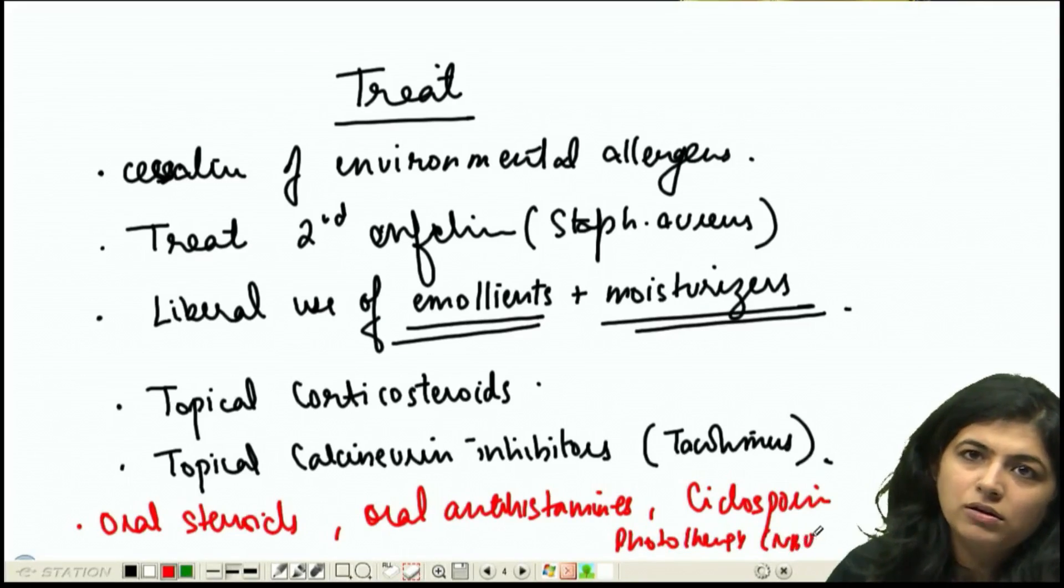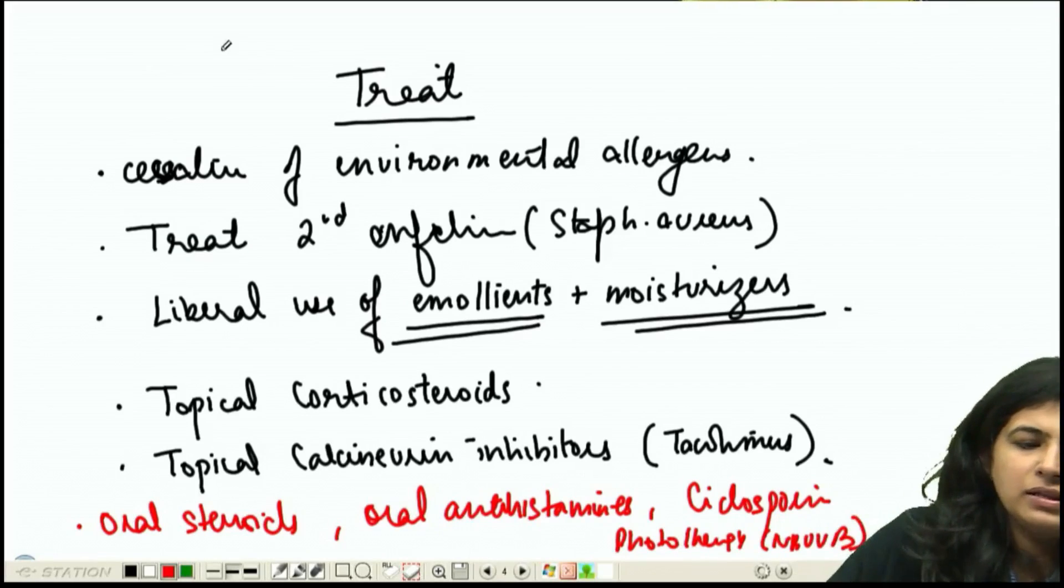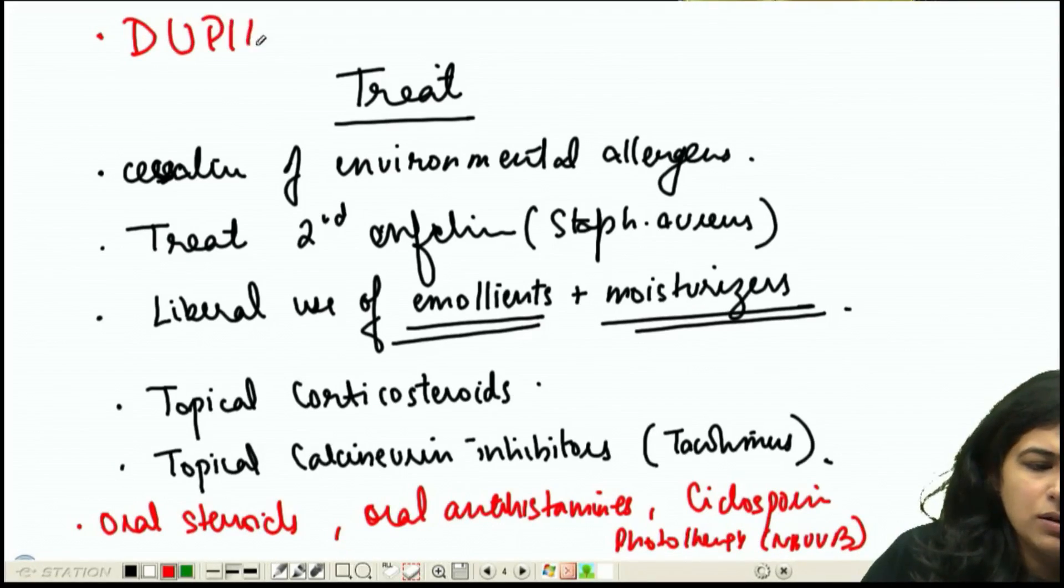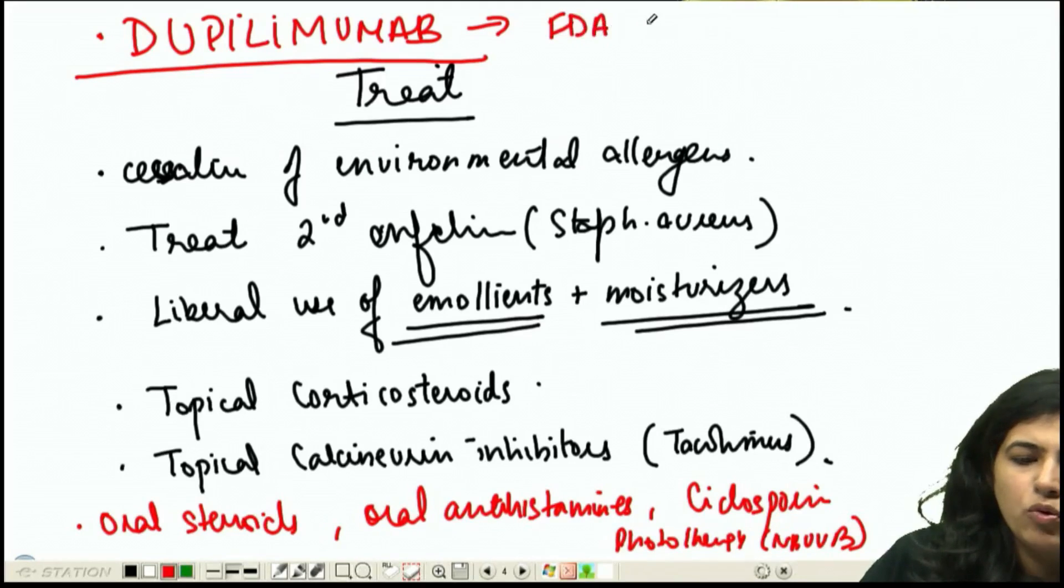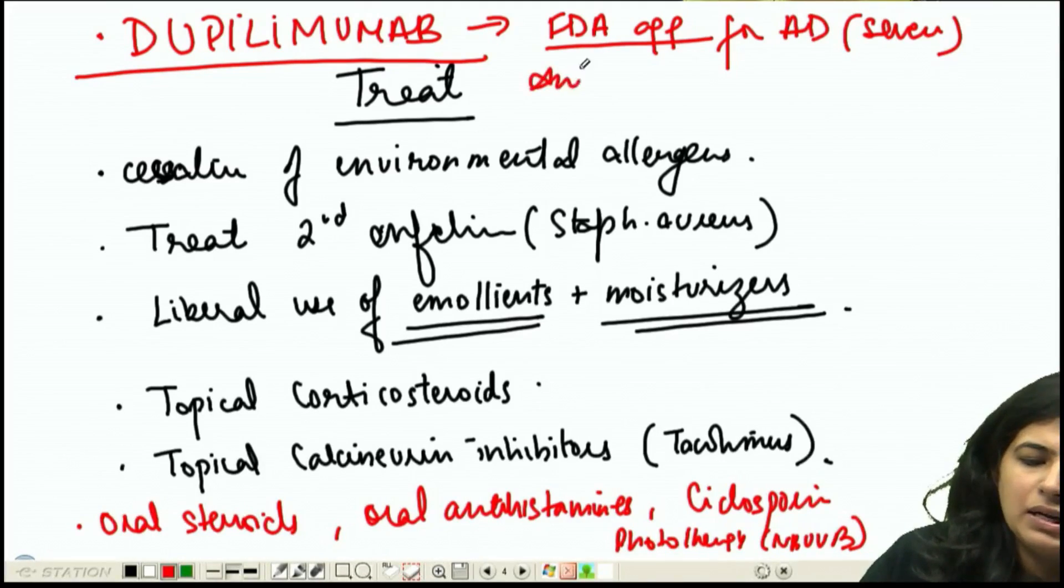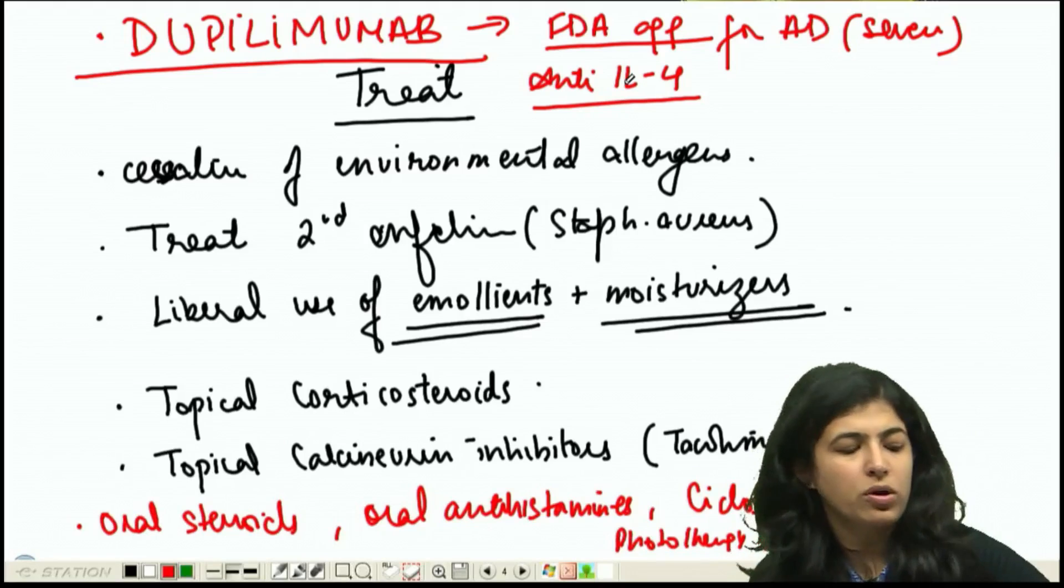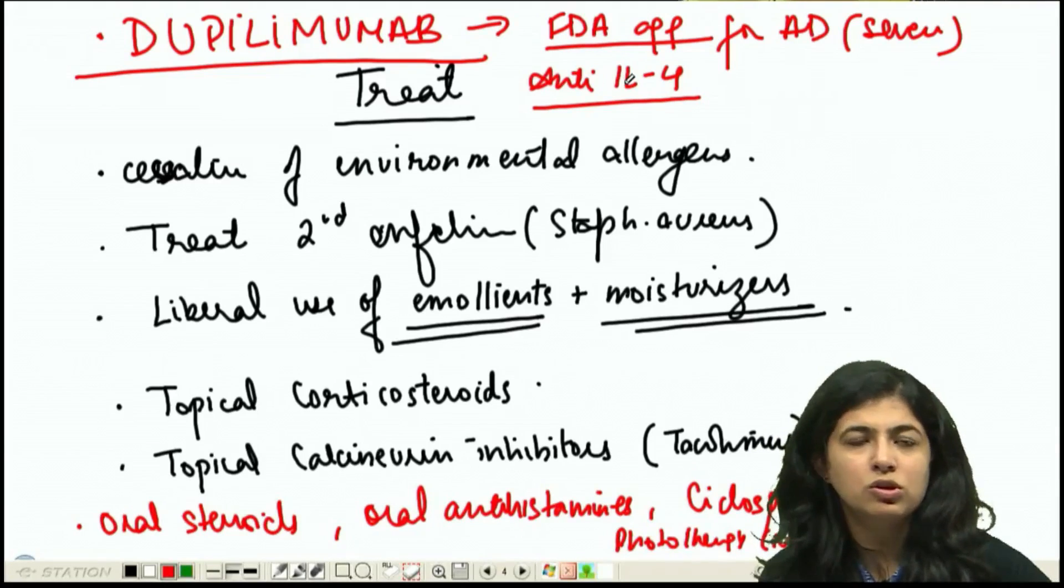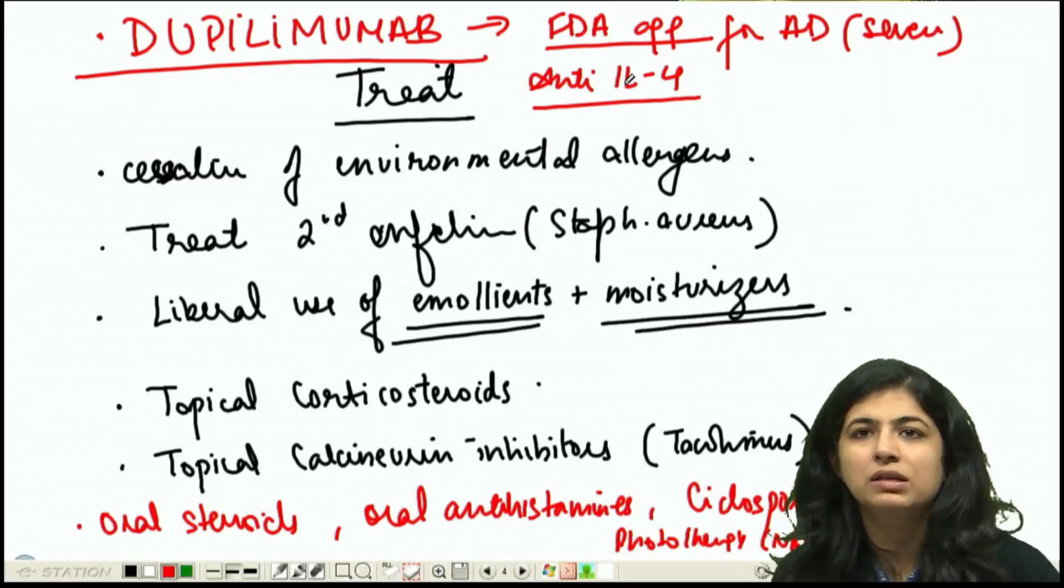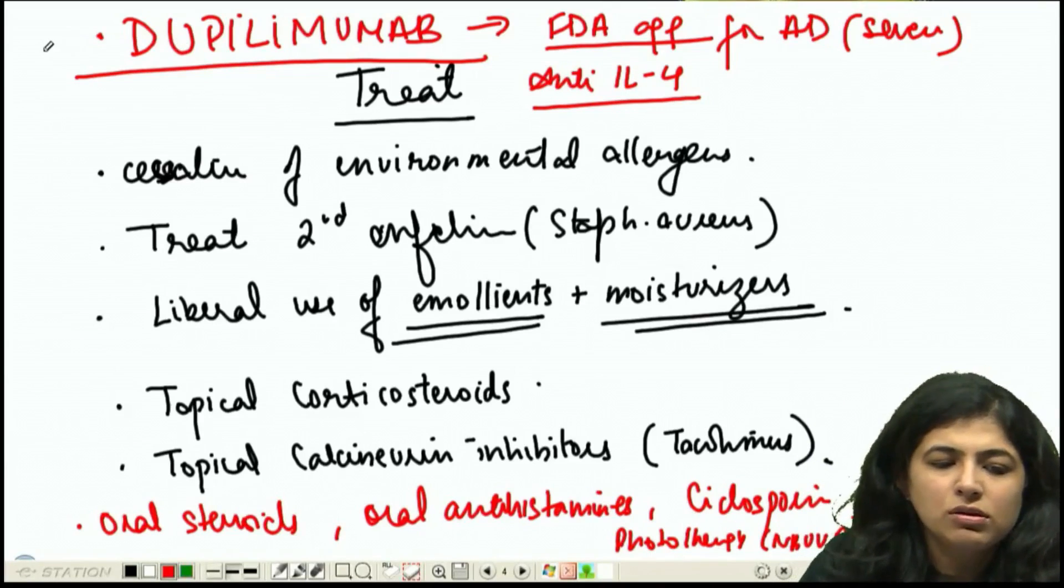Which is narrow band UVB. There's a new drug which has just been FDA approved - dupilumab. This is for severe atopic dermatitis, an anti-interleukin-4 drug for cases not responding to treatment. This has recently been FDA approved and is a very probable question.